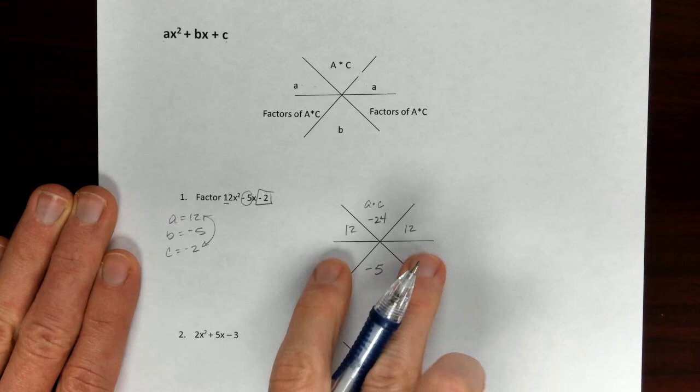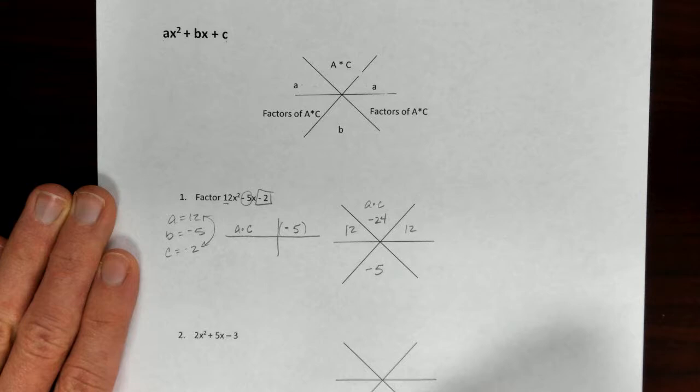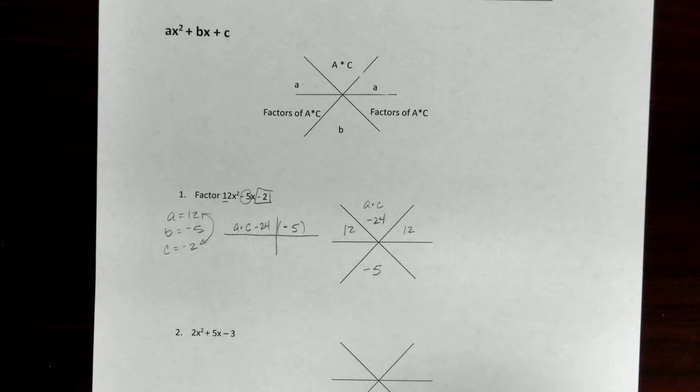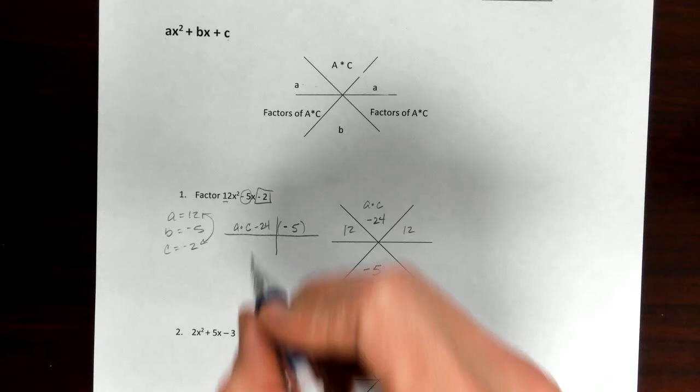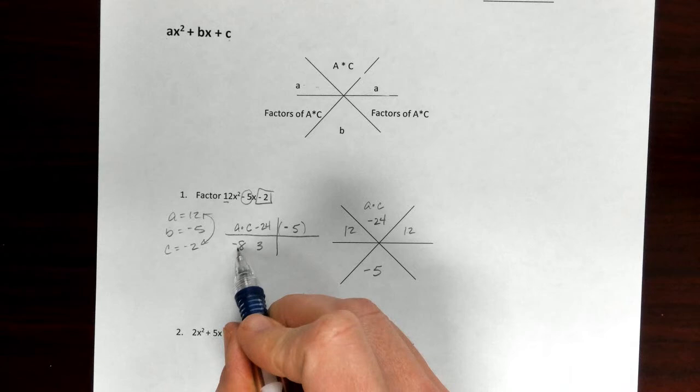Now I'm looking for my factors. We have to do a times c and make our factor chart. We need factors that add to get b, which is negative 5. So I'm multiplying to get negative 24, but adding to get negative 5. My factors are negative 8 and positive 3 — negative 8 times positive 3 gives negative 24, and negative 8 plus positive 3 gives negative 5.